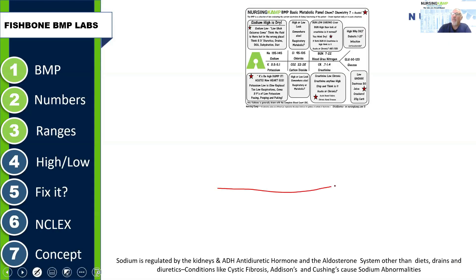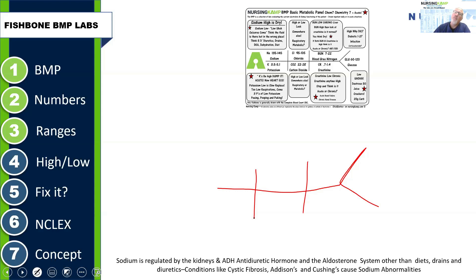So we have the BMP — it's a fishbone, and the fishbone is chronic. What I mean by chronic is that every patient in the hospital would get this fishbone. It gives you a clear picture about what's going on with your patient. It tells you what's in the blood and what compensatory mechanisms are in play, whether it's peeing, puking, pooping, drains, or whether the patient is dehydrated.